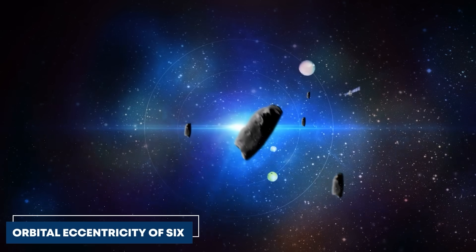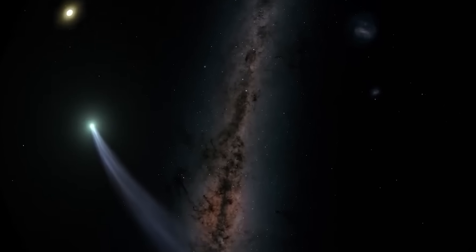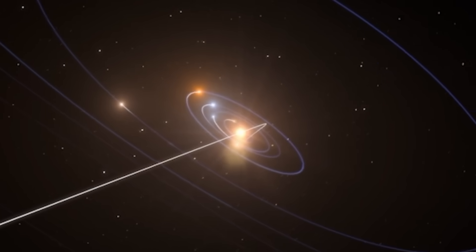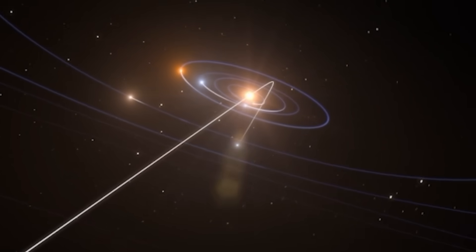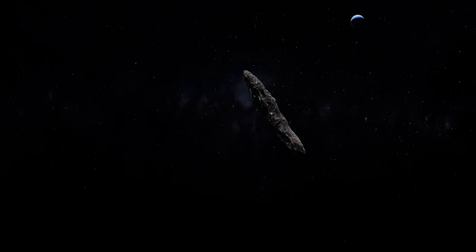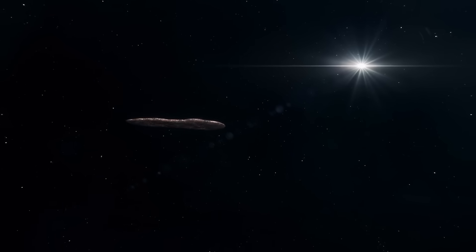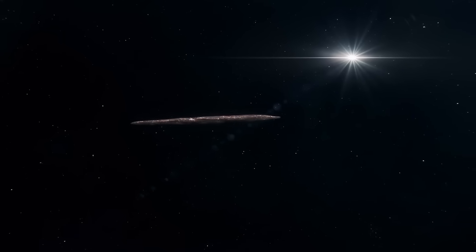More telling is its orbital eccentricity of 6. In simple terms, anything above 1.0 means the object follows an open-ended path never to return. To put this velocity in perspective, our first interstellar visitor, Oumuamua, reached speeds of 26 kilometers per second when it passed through in 2017.